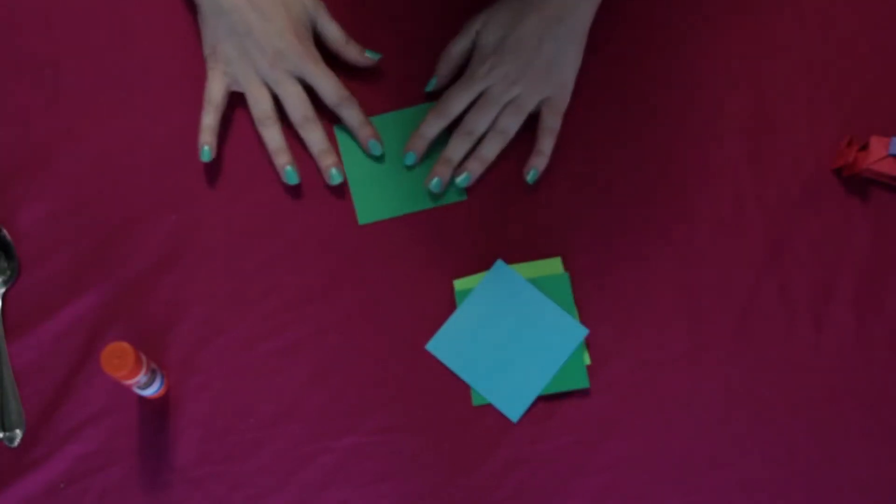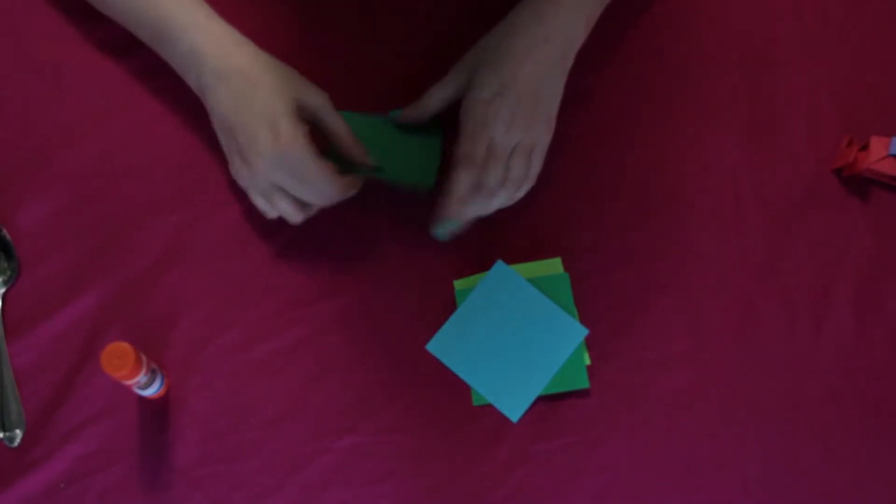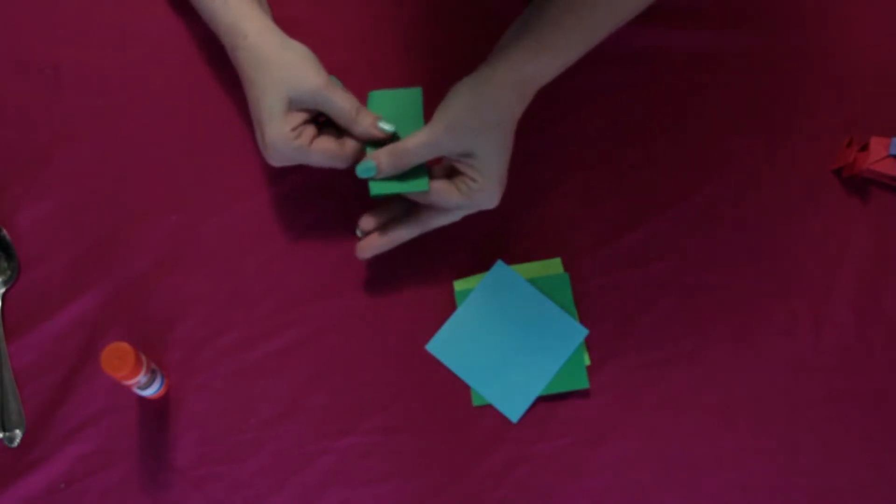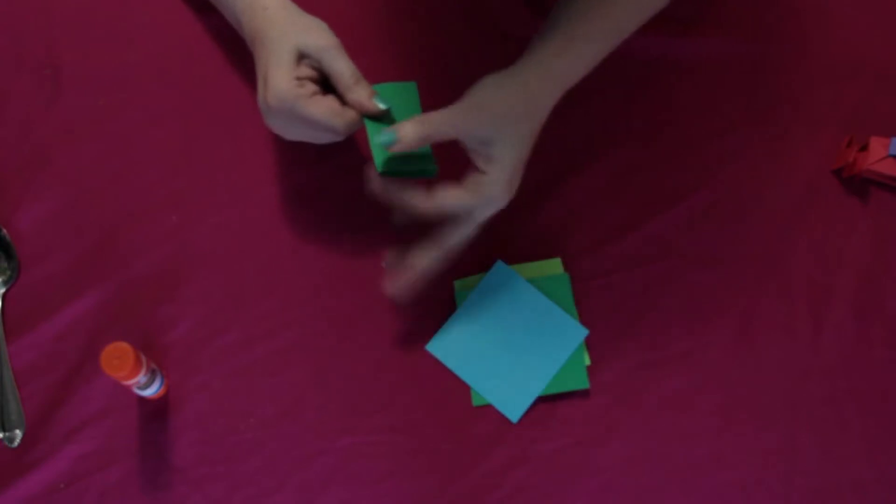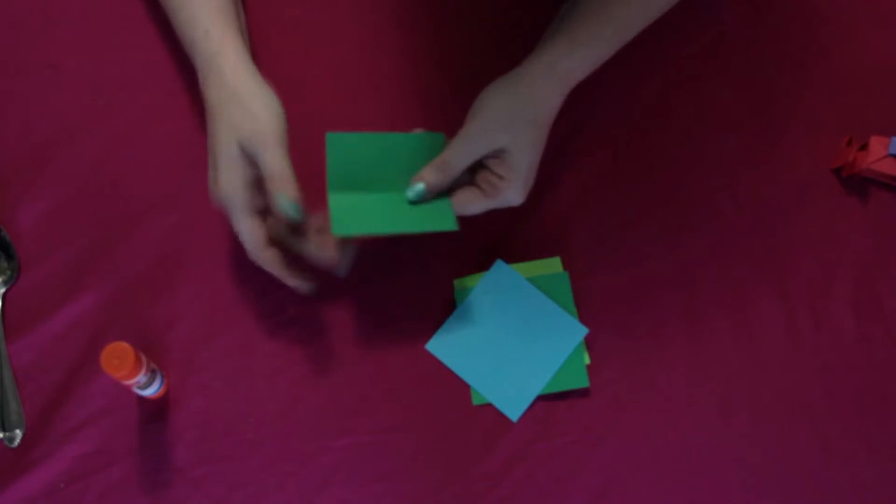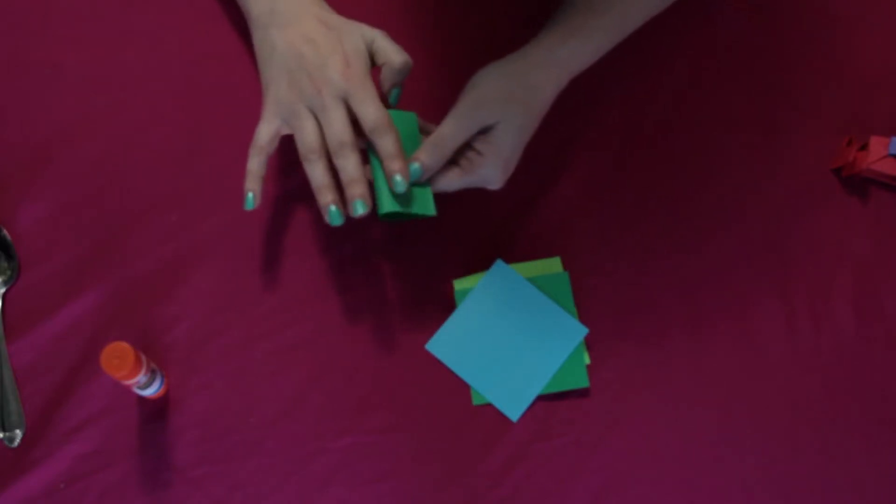So what you're going to do to start is just pick your first piece of paper. You are going to fold it in half like a book. I'm just going to pinch the end so you get a nice tight fold. I'm going to open that up, turn it, and then fold it again just like a book.